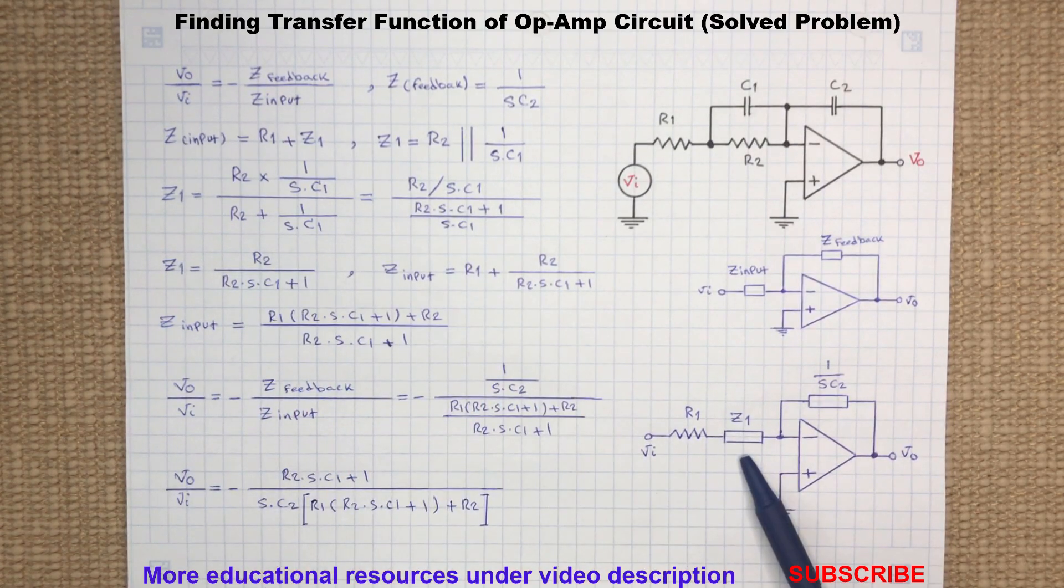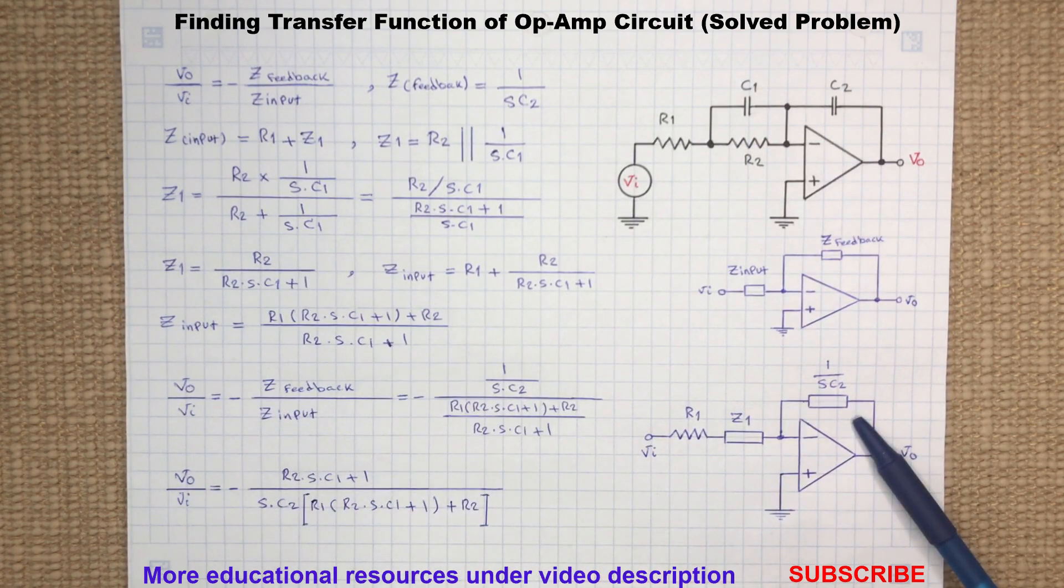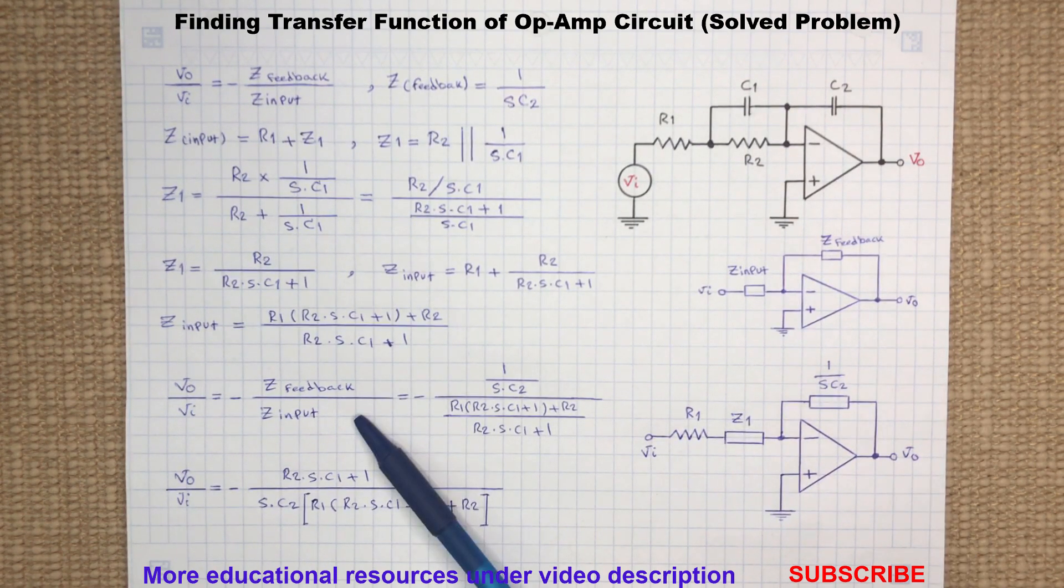Now since we have found Z1, we can calculate the input impedance which is the sum of the value of R1 and Z1. And we know that the feedback impedance is the impedance of the capacitor C2, which is 1 over S times C2.